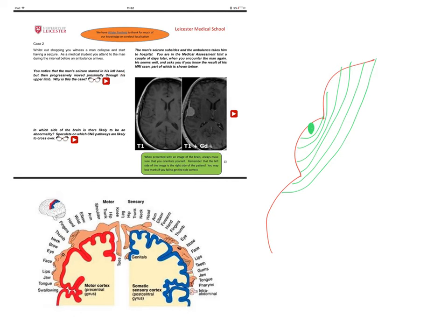So if we look at the motor homunculus down here on the bottom left hand side of the screen, the left hand is around about here. So that's where the epileptic focus is. We know that because it's his hand which starts twitching first.